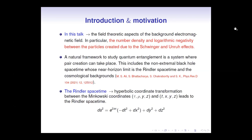Let us start with some introduction and motivation. In this talk, I will discuss the field theoretic aspects of background electromagnetic field — in particular, the number density and the logarithmic negativity between the particles created by the Schwinger and Unruh effects. Our motivation was to study quantum entanglement. A very natural framework to study quantum entanglement is a system where pair creation can take place. Two examples of that are the non-extremal black hole spacetime, whose near-horizon limit is the Rindler spacetime, and cosmological backgrounds.